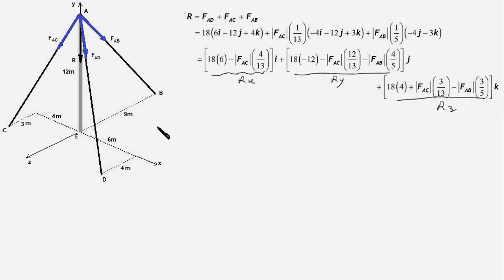Now if R is vertical, then R_x and R_z must be zero. Therefore, in the next step we will equate these coefficients of i and coefficients of k to zero and work out the values of F_AC and F_AB.